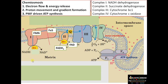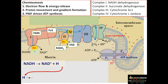NADH donates electrons to Complex 1. The actual reaction: NADH becomes NAD+ and H, providing H+ and electrons. Electrons are moved through different electron carriers like FMN and FES, then moving to Complex 3 and Complex 4. Finally, the electron is received by terminal oxygen, forming water.